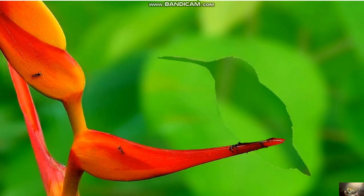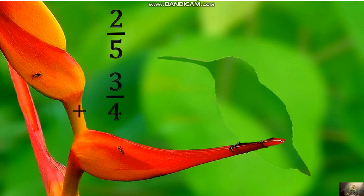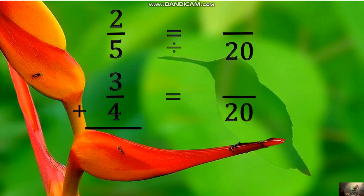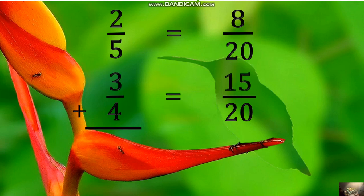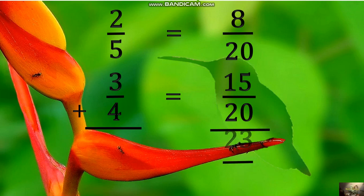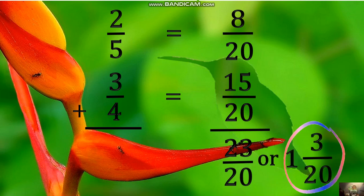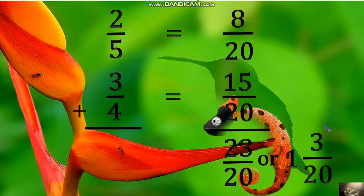Another example using LCD is 2 fifths plus 3 fourths. Finding the LCD, it is 20. 20 divided by 5 equals 4, times 2 equals 8. Another: 20 divided by 4 equals 5, times 3 equals 15. We can now add 8 twentieths and 15 twentieths by adding only the numerators: 8 plus 15 equals 23. Copy the common denominator 20. Therefore, the answer is 23 twentieths or 1 and 3 twentieths, by finding the least common denominator method.